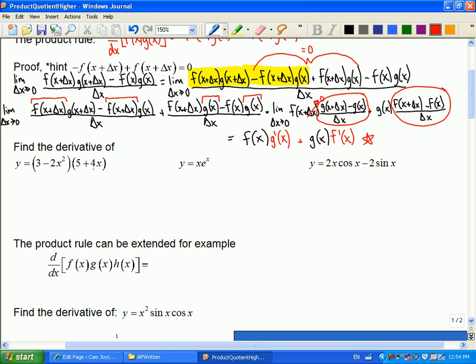This one's not so bad, we could just use foil and expand this out. But let's try doing it with the product rule instead. Let's call this my f(x) and this my g(x). We're going to pretend these are two different functions being multiplied together. So the derivative is going to be, what's the derivative of f? Minus 4x. Good.